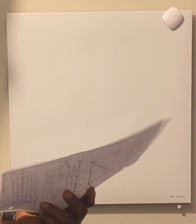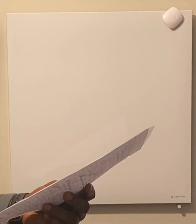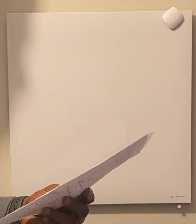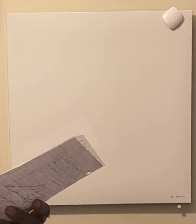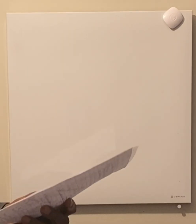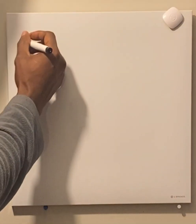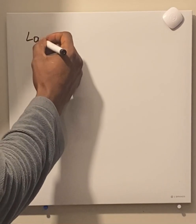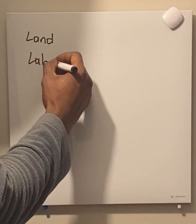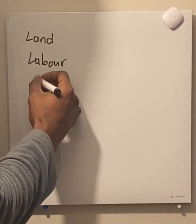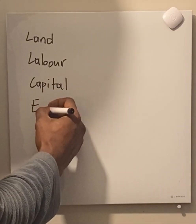Our functional distribution of income, and as it pertains to or leads to poverty. Functional distribution of income is basically the portion or proportion of income that goes to the factors, or the owners of factors of production. Owners of factors of production are landowners, labor, capital, and entrepreneur or enterprise.